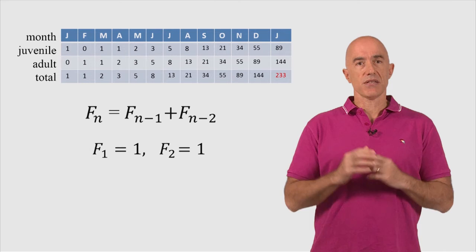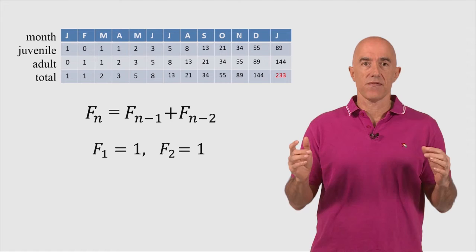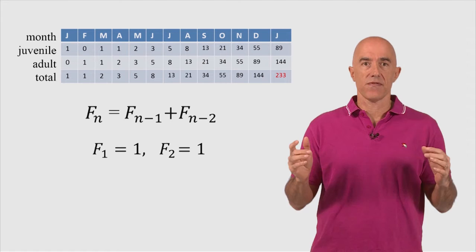So in this video, we derived the Fibonacci sequence. The rest of the course, we'll look at some interesting properties of this sequence and also its relationship to a famous number, which is called the golden ratio. I'll see you next time.